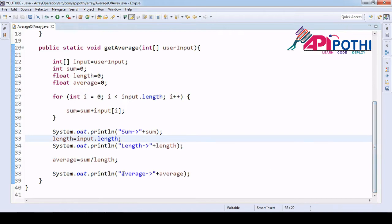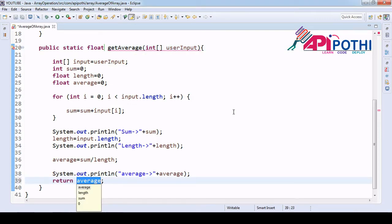So now we got the output as average. We are saving this value in a float type, so we can easily return it as float.